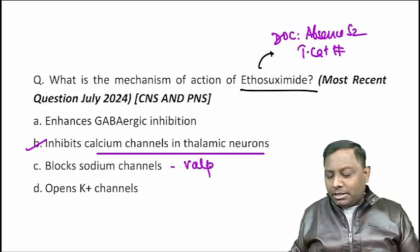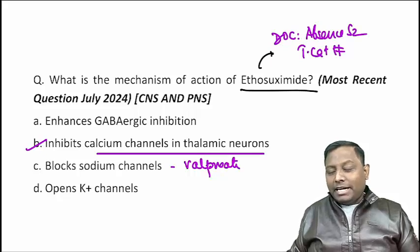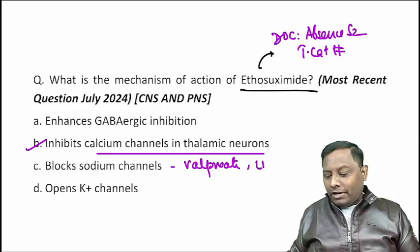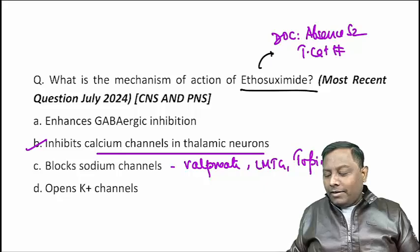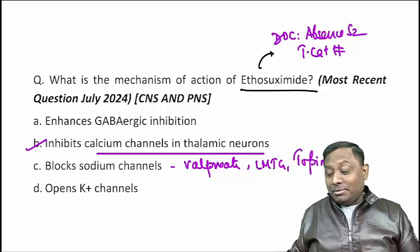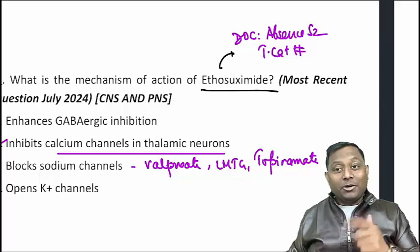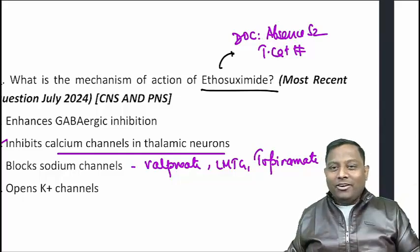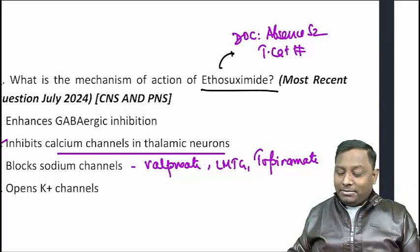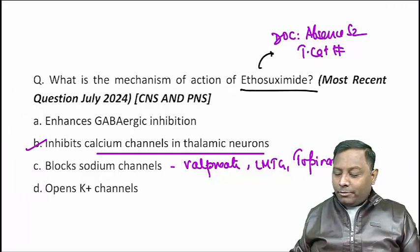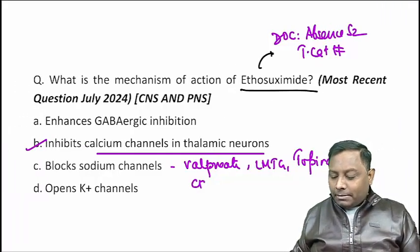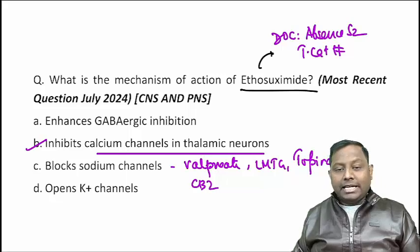Sodium channel blockers are the major anti-epileptic drugs — such as valproate, lamotrigine, and topiramate (the 'topi pahenne wala' — the hat-wearer). There is a story behind the name. These drugs — valproate, topiramate, carbamazepine — are all sodium channel blockers used as major anti-epileptic agents.